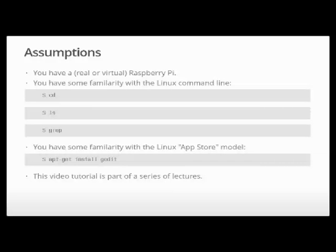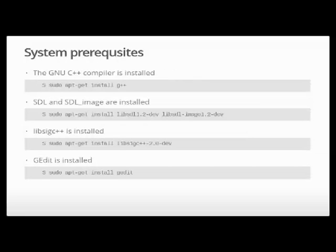My usual assumptions about you: you have a Raspberry Pi, either a real piece of hardware or you're emulating one using something like QEMU. I'm going to assume I don't have to explain Linux command line stuff to you, and I'm also going to assume I don't have to explain how to install applications using the Linux command line. This video tutorial is part of a series of lectures — 15 to 20 minute overviews of what I go into in more depth in class at the University of Brighton.